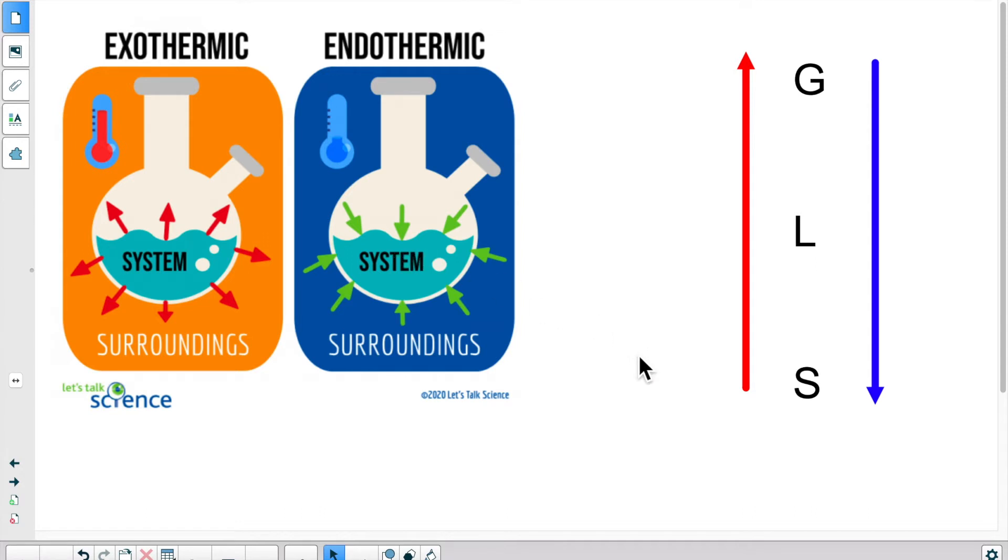If we look at changes of state from solid to liquid to gas, the substance is getting warmer. In order to get warmer, the substance had to absorb energy. So, that would be the endothermic pathway.